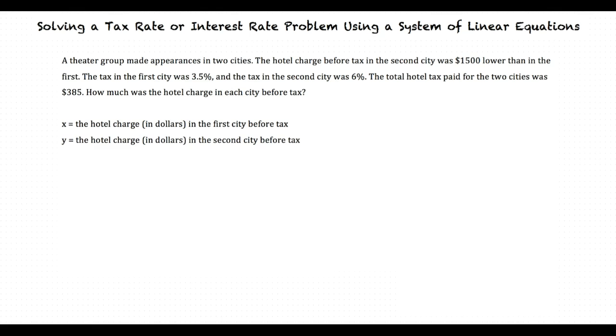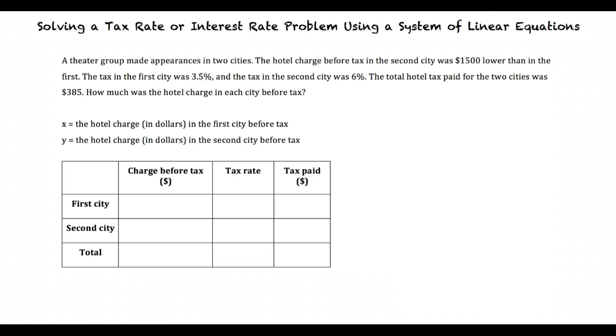We were given a lot of information for this problem, so let's make a table to organize our data. We already decided that X would be the hotel charge in dollars in the first city before tax, and Y the hotel charge in dollars in the second city before tax, so we can insert that into our table.